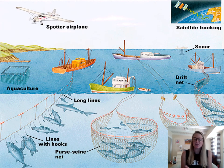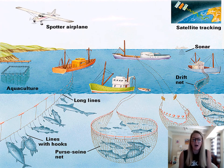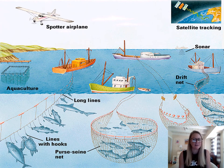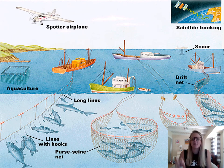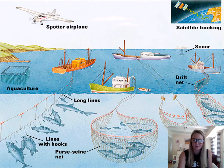This picture is an overview of all the different fishing techniques that exist. It also includes things like satellite tracking and spotter airplanes — how fish are identified in the water. We have drift nets, long lines, and purse seines. We're going to talk about all of those and then finish up with environmental impacts, and of course we have to talk about aquaculture.